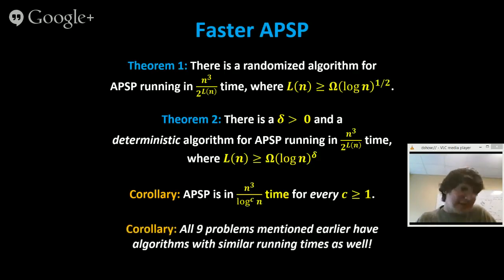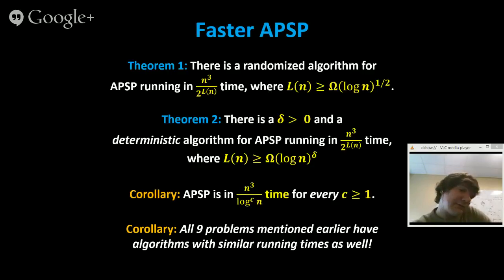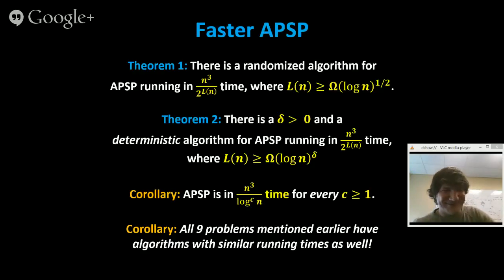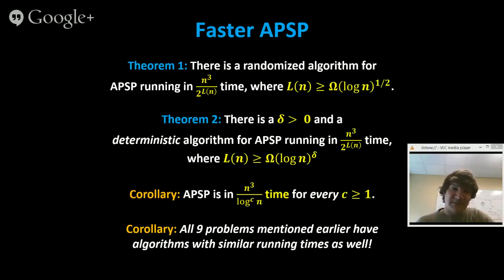As a corollary, the truly subcubic reducibilities hold under even improvements like this, so all nine equivalent problems now have algorithms with similar running times — a clean shave of all polylog factors — where previously the best for any of them was n³ / log². Virginia doesn't agree that APSP is in truly subcubic time, but I think these ideas could actually lead to a truly subcubic algorithm. The techniques are perhaps more interesting than the quantitative improvement.